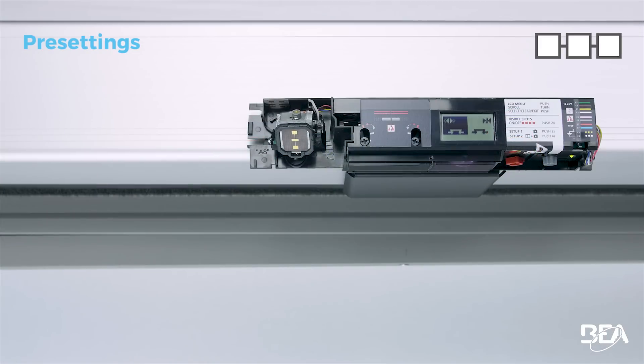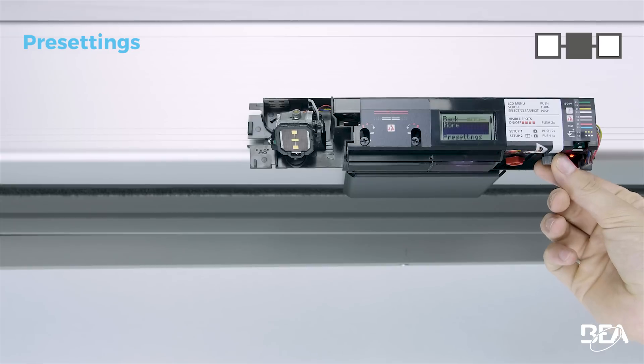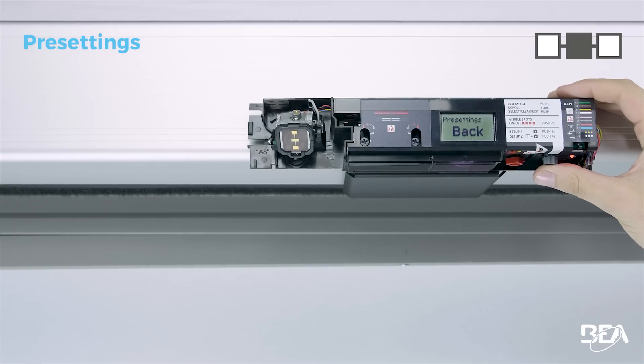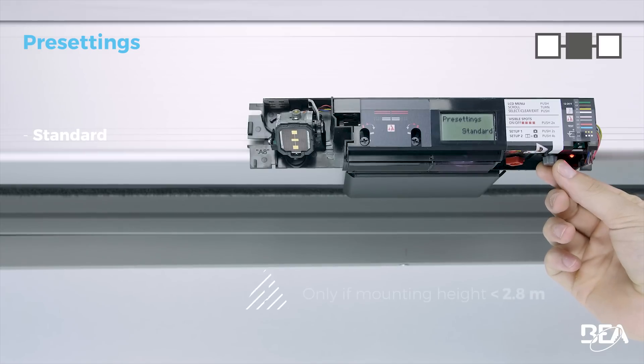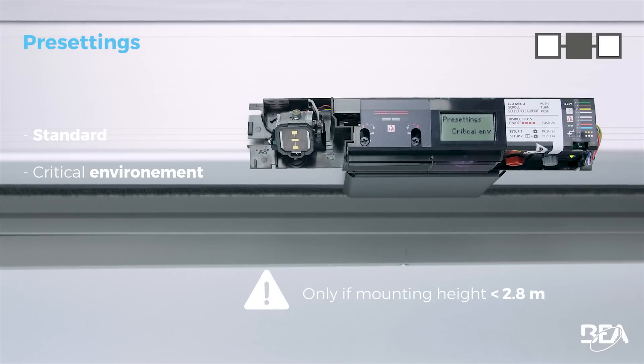Instead of manual adjustments, you can choose one of the three pre-settings to quickly adapt the sensor to your application: standard, critical environment for better immunity to environmental changes, or shopping street in narrow lanes with pedestrian cross traffic.